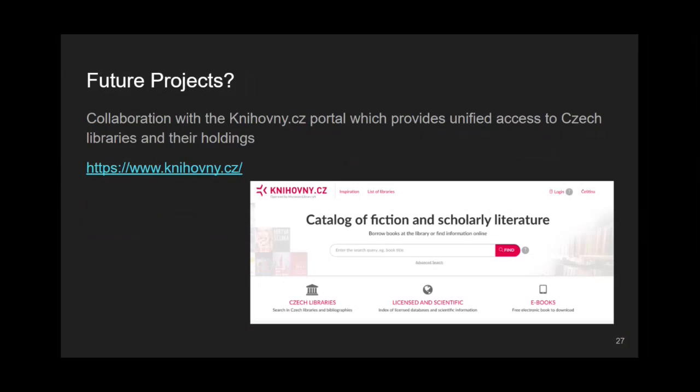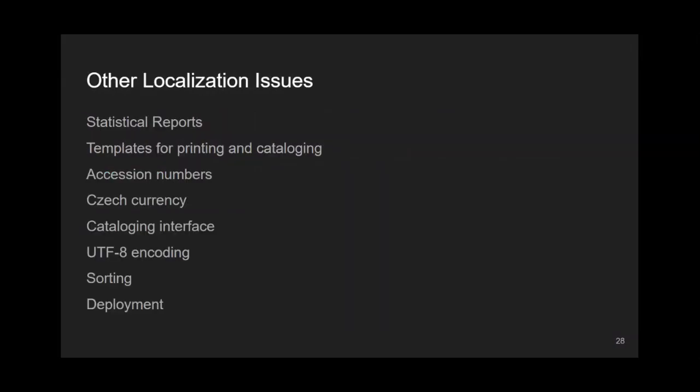As to our plans for the future, we would like to start collaboration with the portal called knihovny.cz, which provides unified access to Czech libraries and their holdings. Now let us have a look at some of the other localization issues. We have organized them into eight categories: Statistic Reports, Templates for Printing and Cataloging, Accession Numbers, Czech Currency, Cataloging Interface, UTF-8 Encoding, Sorting, and Deployment.